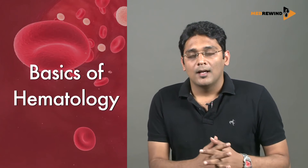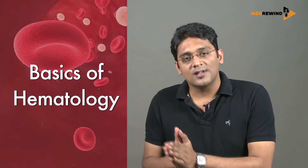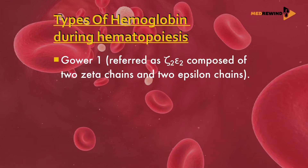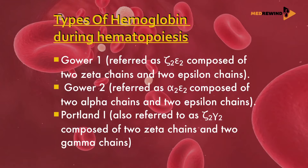Before being converted into fetal hemoglobin, there are mainly three stages of embryonic hemoglobin. First is Gower 1, composed of two zeta and two epsilon chains. Then Gower 2, composed of two alpha and two epsilon chains. Then Portland hemoglobin (Portland 1), composed of two zeta and two gamma chains.